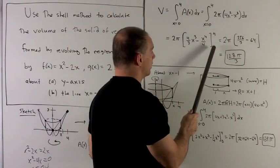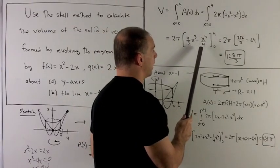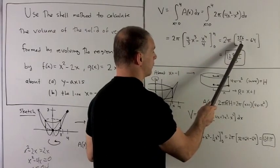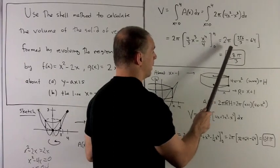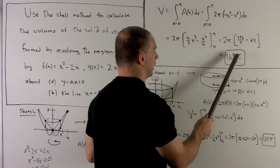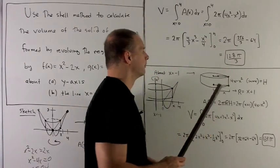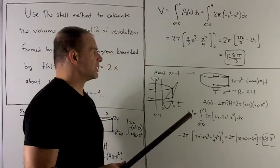Putting in 4, putting in 0 is going to give me 0. So we don't have to worry about it. Putting in 4, it's going to be 256/3 - 64. And then multiplying that by 2π gives me 128π/3. So that's about 40-something times π.